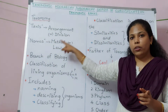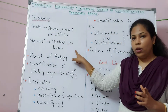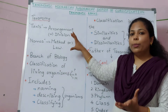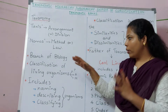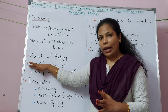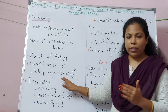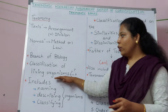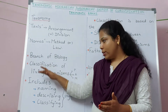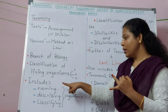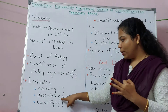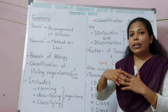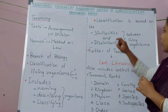Taxis means arrangement, nomos means method. So taxonomy is a branch of biology — it is the method of arranging living organisms. We are classifying living organisms, which includes plants, animals, and microorganisms. We are not just classifying organisms; we are identifying living organisms, naming them, describing their characteristic features, and then classifying them.